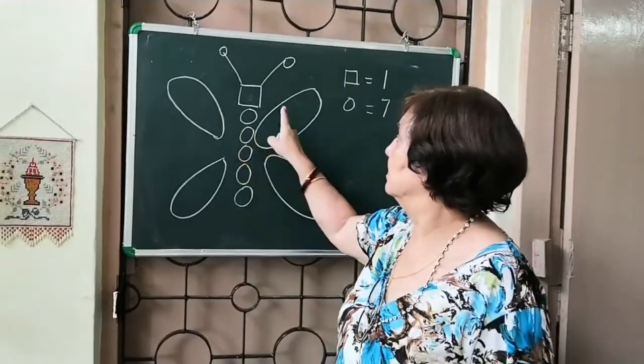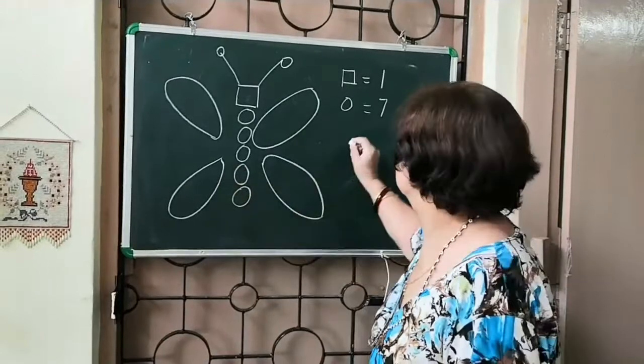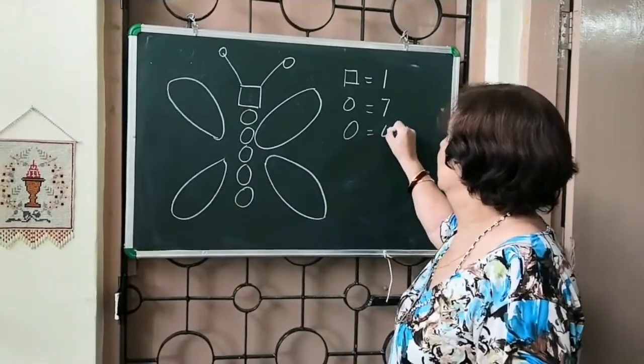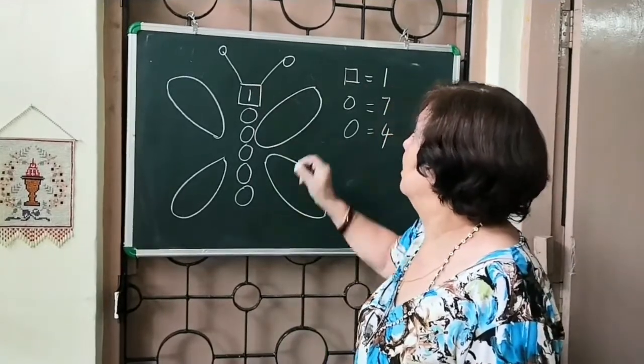How many ovals? How many ovals are there? One, two, three, four. Four ovals. So let's repeat. There is one square. How many circles?